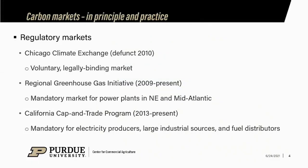California has its own cap-and-trade market, going since 2013. Major sources of electricity, industrial sources, and fuel distribution sources — about 450 firms — are regulated under California's carbon market. California's program does have a small element of agriculture with dairies: if you're a dairy producer and you install a methane digester, you can participate as a source of offsets. Another example would be agroforestry, but otherwise opportunities for agriculture are very limited.